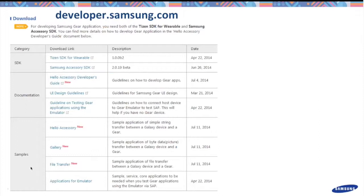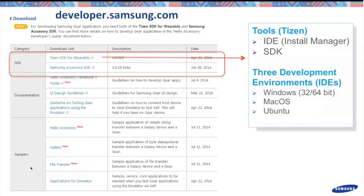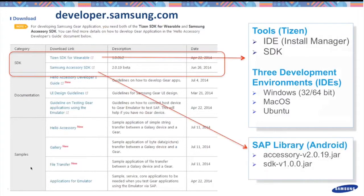To download the SDK, go to developer.samsung.com and follow the Samsung Gear link to find the SDK. What you need is the Tizen SDK for Wearable. We support three development environments: Windows, macOS, and Ubuntu. There is a bundled Eclipse IDE included as part of the SDK. If your app requires communication between your phone app and wearable app, you need a separate piece — the SAP library, downloadable from Samsung Accessory SDK. Two JAR files are included which you import into your Android project. On the same page you'll find additional documentation and sample apps.